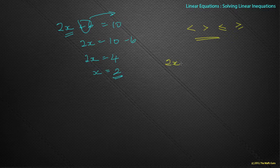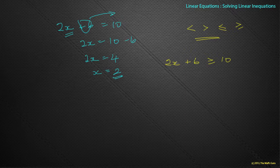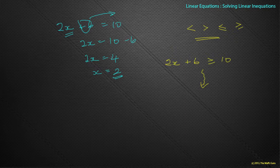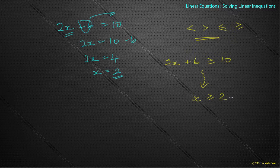For example, you could write it as 2x plus 6 is greater than or equal to 10. What does that now mean? If it was equal to, it meant x could only have one value. But in this situation, x can actually have more than one value. If we were to go down and do the same level of working out, we would keep the sign as greater than or equal to, and we'd end up with x is greater than or equal to 2.